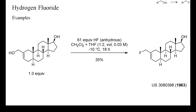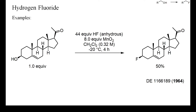Fluorinated steroids were of great interest in the 1960s, both as potential anti-inflammatories and as oral contraceptives. In this example, a steroid-derived allylic alcohol was converted into the corresponding fluoride by treatment with anhydrous hydrogen fluoride. Although a selective deoxyfluorination without allylic rearrangement could be achieved, the yield was low, and no elimination of the secondary alcohol occurred. In another instance, the yield was a bit better but still only 50%; the displacement occurred with retention of configuration because of the intermediate formation of a cyclopropylmethyl cation. The inventors did not explain how manganese dioxide influenced the reaction and only stated that its use was beneficial. Manganese trifluoride or tetrafluoride were probably not formed, as these are strong electrophilic fluorinating reagents that would also fluorinate olefins and ketones.